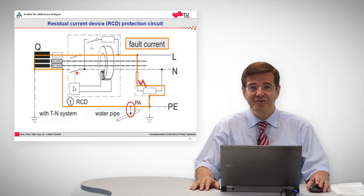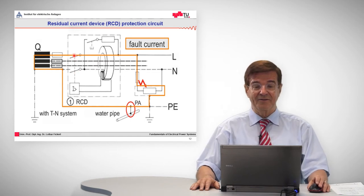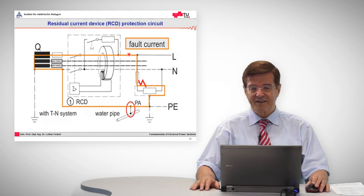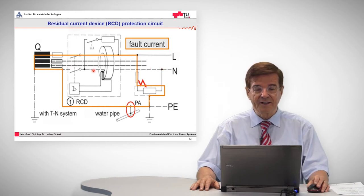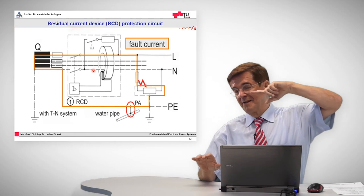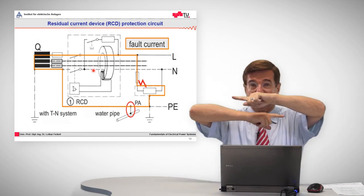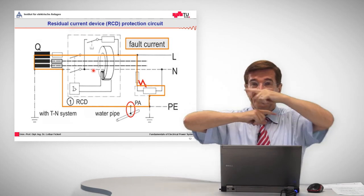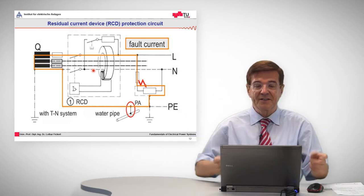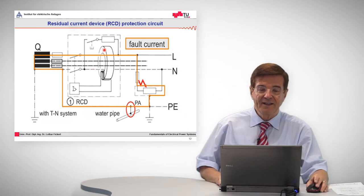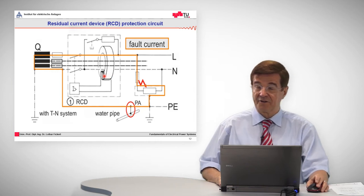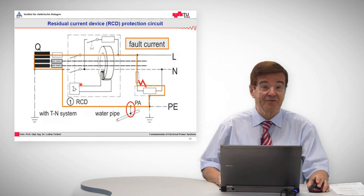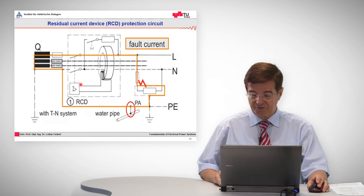By the way, the question is why doesn't it trip under normal circumstances? That's easy to understand. The current goes in here, goes regularly through our body, our lamp, whatever it is, and returns here. So we have one current going this way, one current going the other way, and they induce fields that are vice versa. The fields annihilate each other, so there is no field here. If there are no fields, there is no induced voltage. When there is no induced voltage, this will not trip.